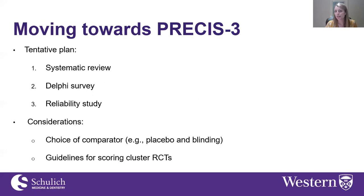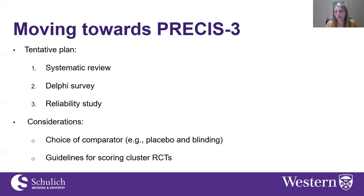Moving towards PRECIS-3, considering the comments in the literature, we have assembled an international group of researchers to prepare an update of the tool. Our tentative plan is to conduct a systematic review, currently underway, followed by a Delphi survey to decide which elements to include in the updated version, and then a reliability study. Some things we're considering for updates include the choice of comparator — including blinding and placebos — and guidelines for scoring cluster randomized trials, as neither the original PRECIS article nor PRECIS-2 provide guidance on scoring a cluster trial on multiple levels.